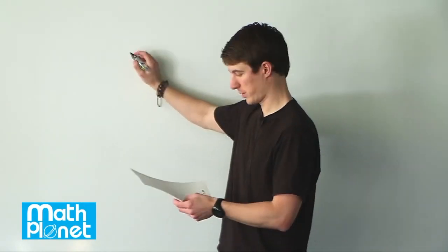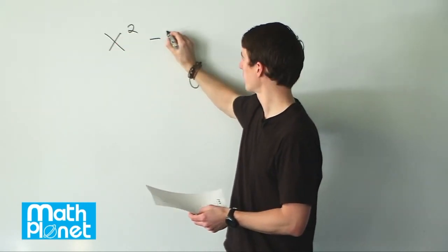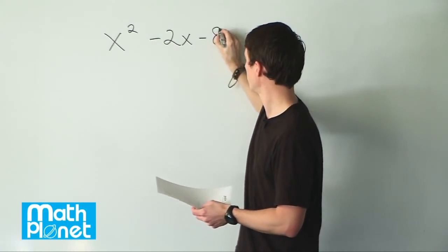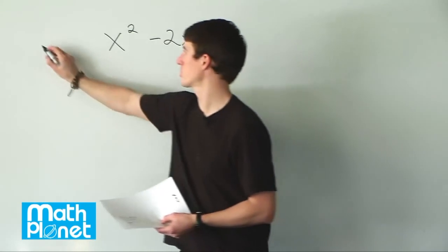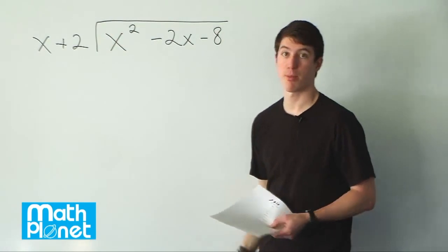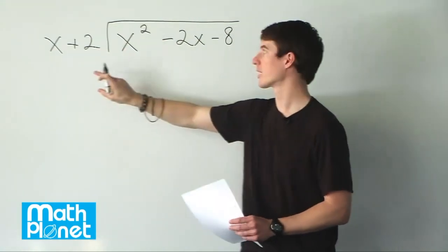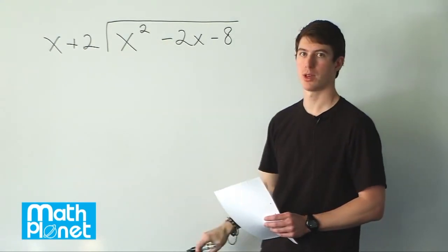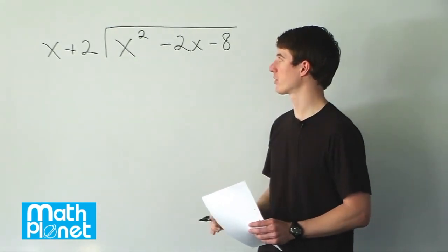Here we have a simple polynomial division — it's just like long division, but with polynomials. So we start with the expression x squared minus 2x minus 8, and we want to divide this by x plus 2. It looks just like long division, but it's polynomial division. What we need to find is something that multiplies by x that can eliminate the highest order term. It's important that we have this written in descending order of power.